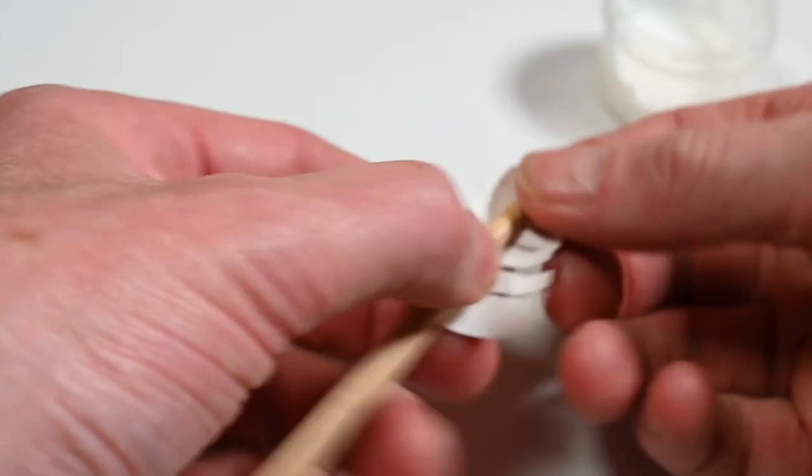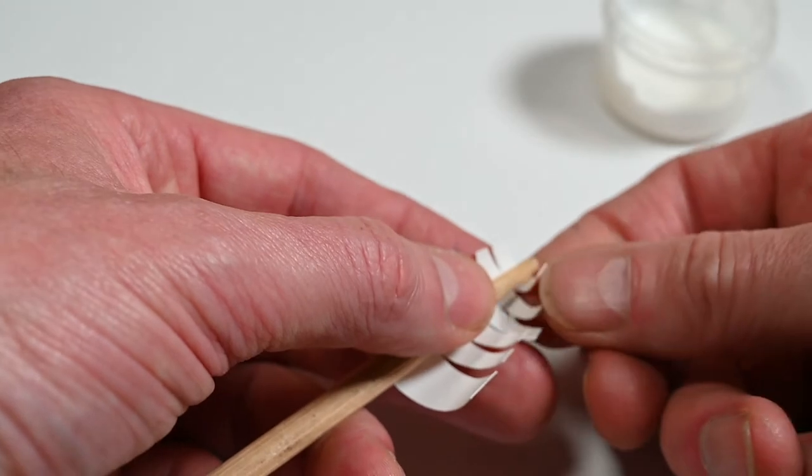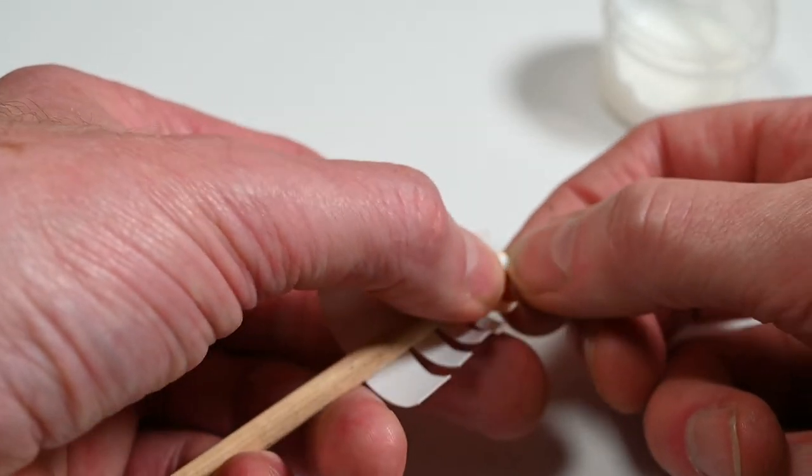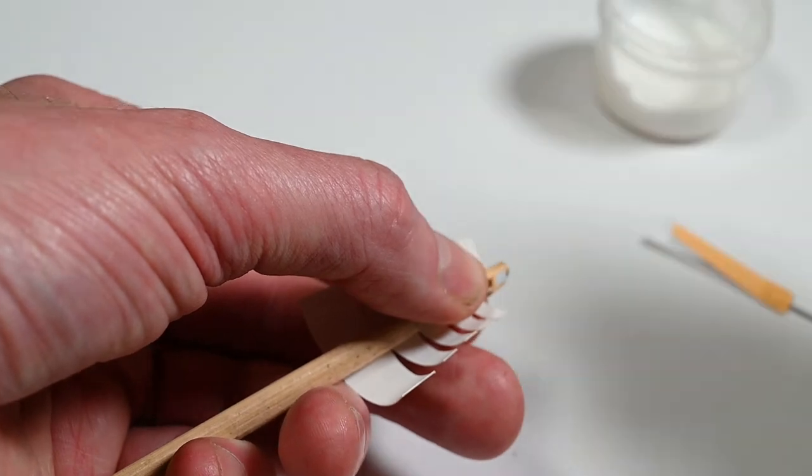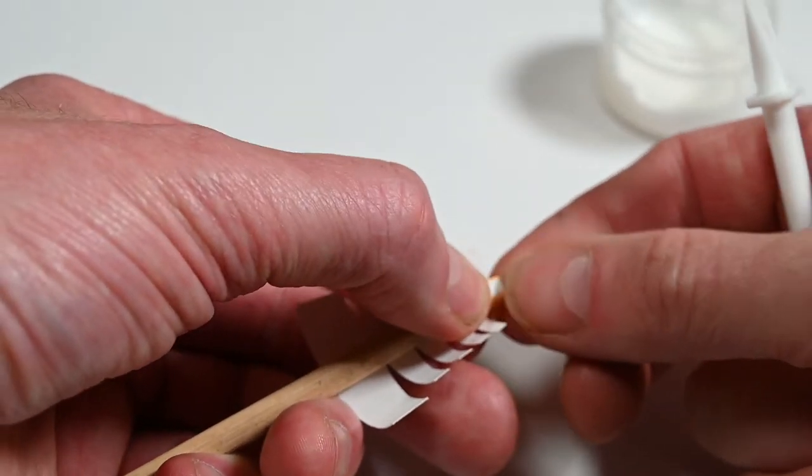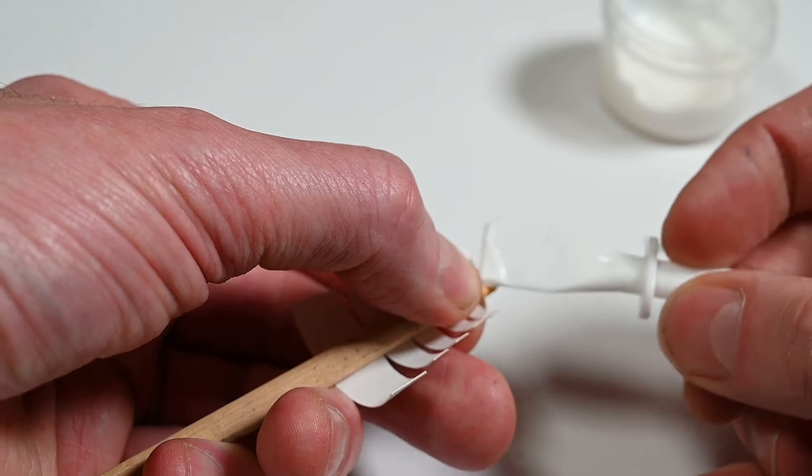And then I'm going to use this chopstick as a former while I'm assembling this. So I'm going to start at the top. Curve the first piece round. Apply a tiny dot of glue up here. This is quite fiddly this first one. Because it's so small.